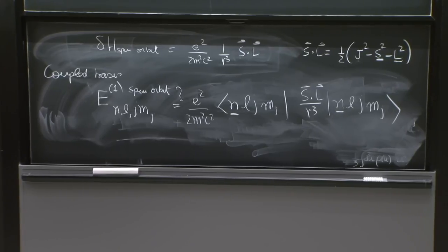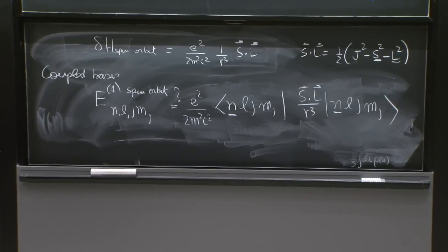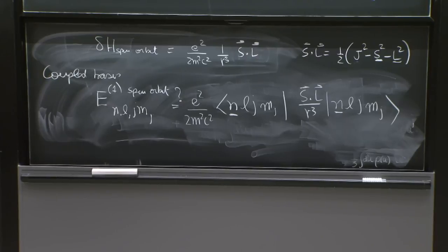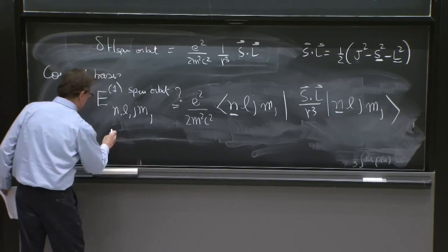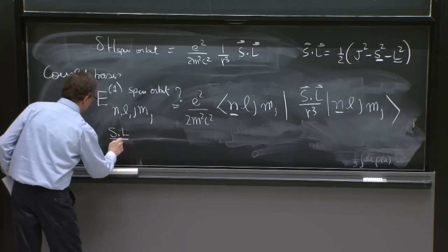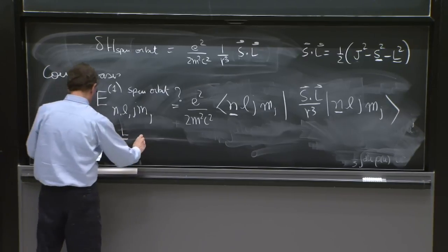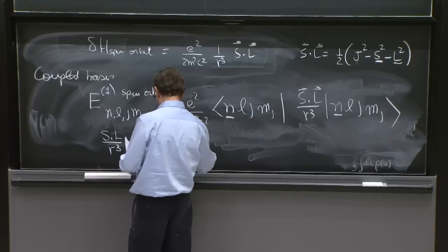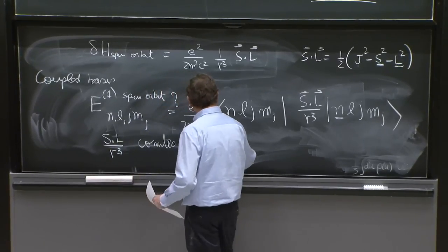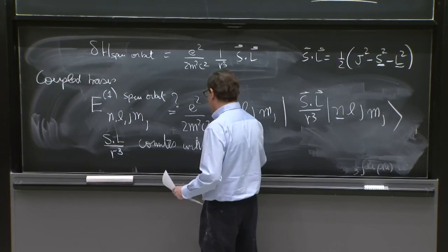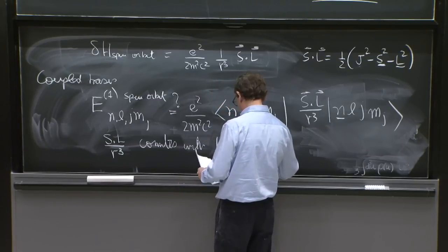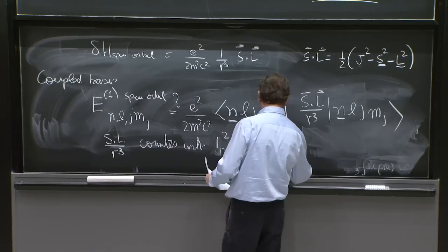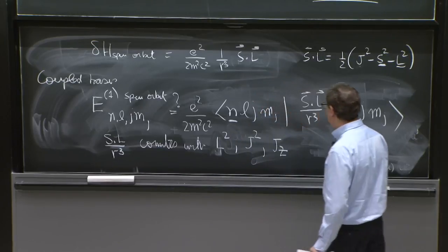And the answer is yes, because the perturbation s dot l over r cubed commutes with l squared, with j squared, and with jz.